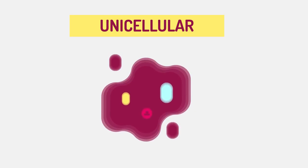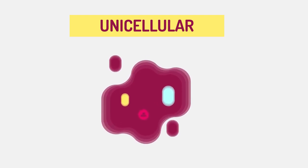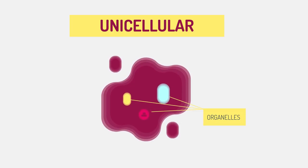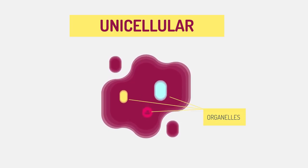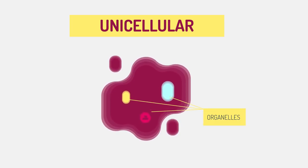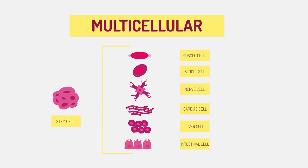Unicellular organisms can carry out all life processes in just the one cell, using internal structures called organelles. The decreased ability to share out life processes means unicellular organisms have a low level of efficiency, whereas multicellular organisms are highly efficient, with division of labour at the cellular, tissue, or organ system level.